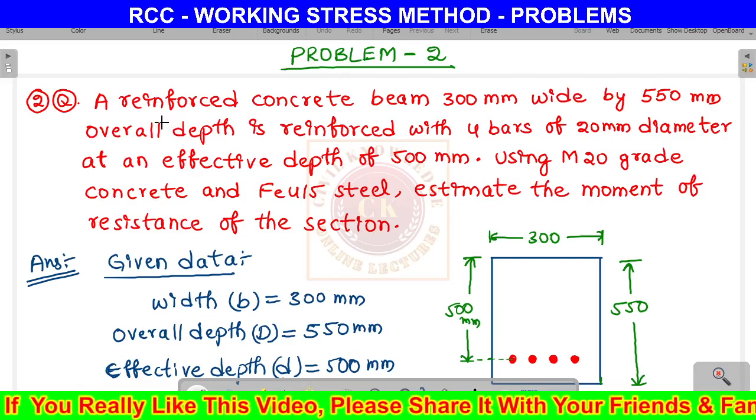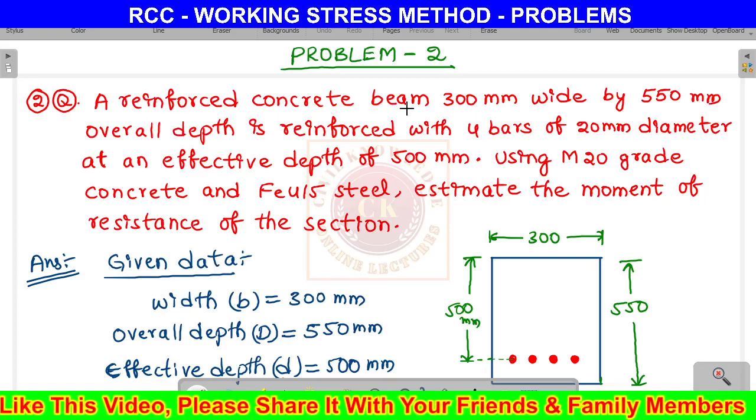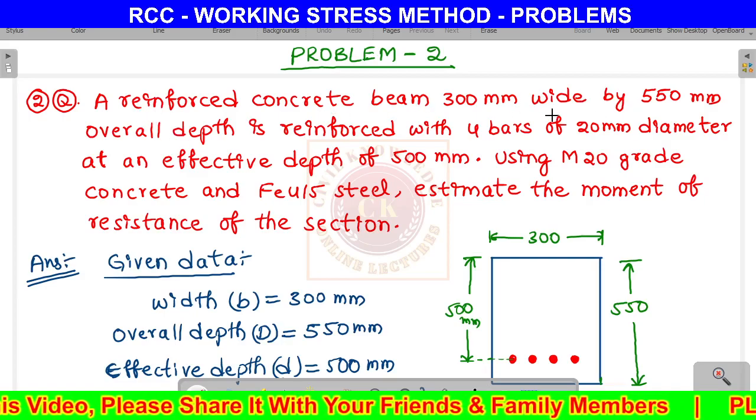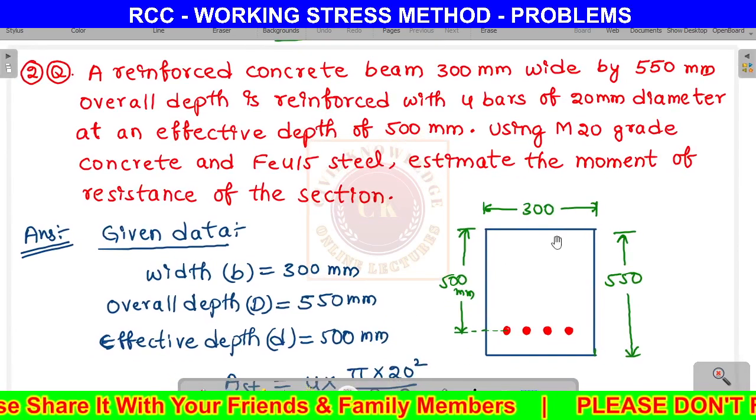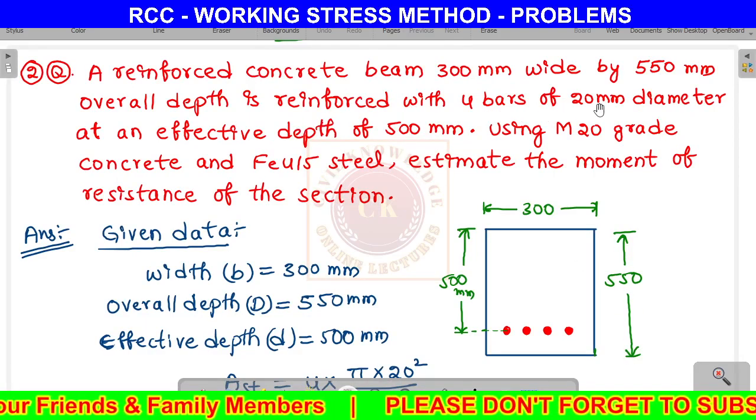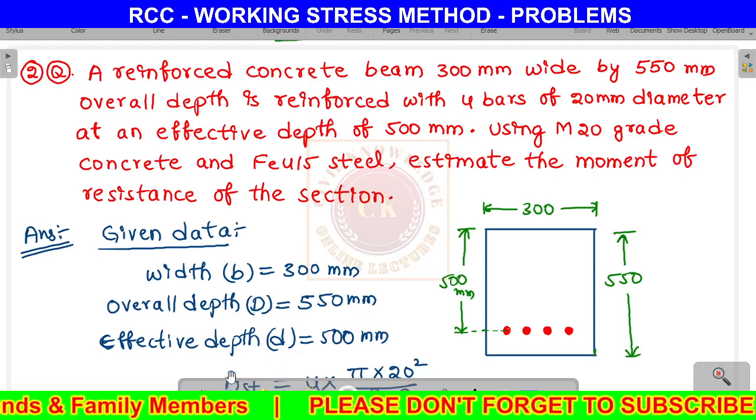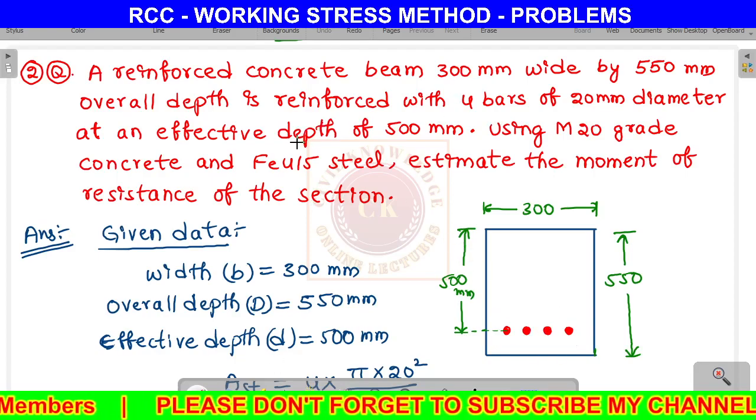The question is: a reinforced concrete beam is 300 mm wide by 550 mm overall depth, and it is reinforced with 4 bars of 20 mm diameter.